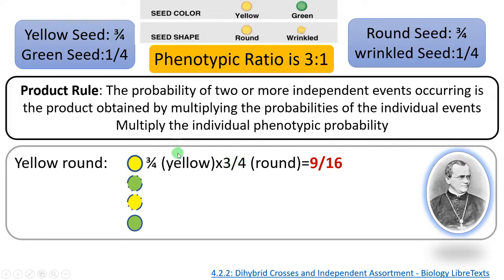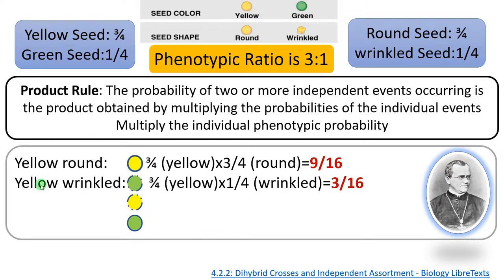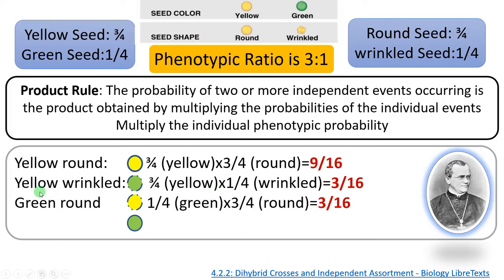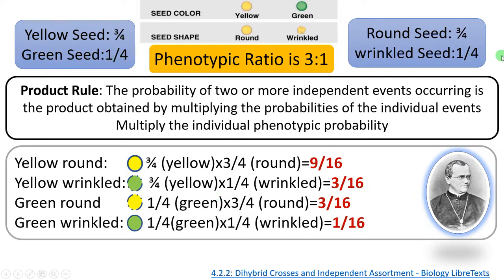Yellow is 3/4 and round is also 3/4, so yellow round = 3 × 3 = 9/16. Yellow wrinkled: yellow is 3/4 and wrinkled is 1/4, so that is 3/16. Green round: green is 1/4 and round is 3/4, so that is also 3/16. Green wrinkled: both are 1/4, so that is 1/16. This gives the predicted 9:3:3:1 ratio. After the dihybrid cross, if this ratio is obtained, Mendel confirmed that both traits are independently assorting.